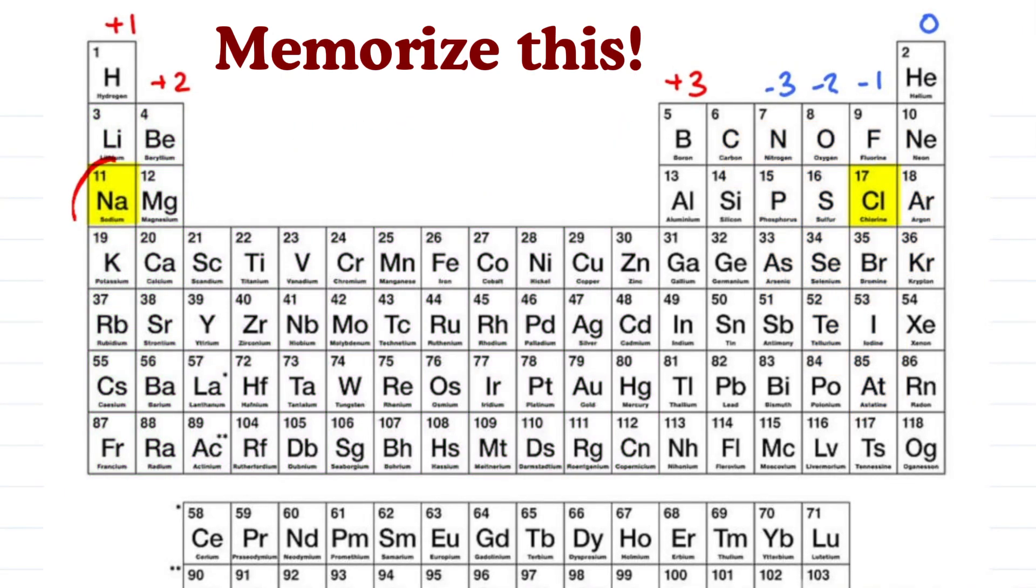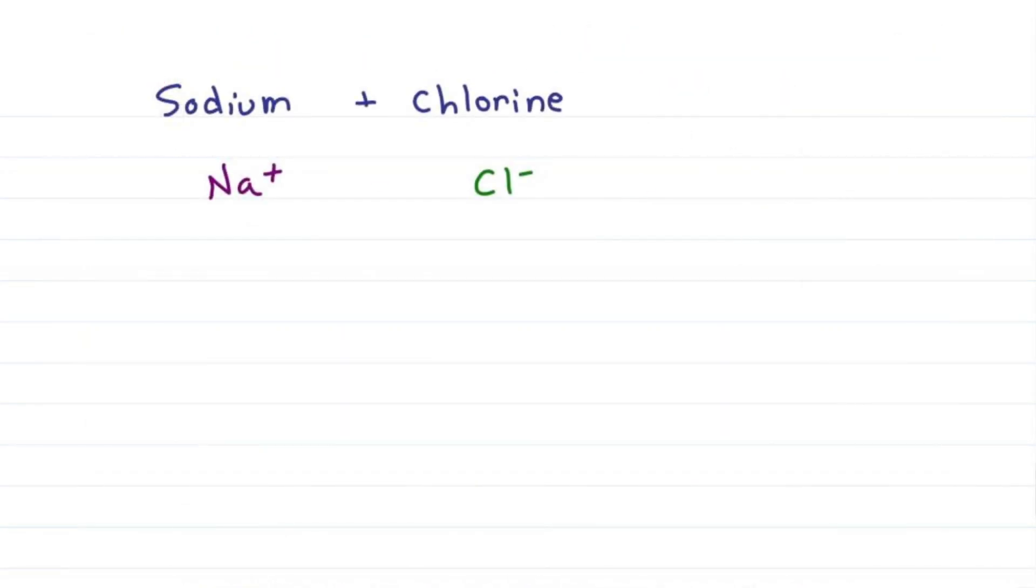From the table we see sodium is plus 1 and Cl minus 1. Bring them together and we get NaCl. Is the compound neutral? The net charge must be 0. Plus 1 minus 1 equals 0, yep.